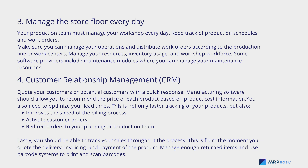Four: customer relationship management (CRM). Quote your customers or potential customers with a quick response. Manufacturing software should allow you to recommend the price of each product based on product cost information. You also need to optimize your lead times — this not only enables faster tracking of your products but also improves the speed of the billing process. Activate customer orders and redirect them to your planning or production team. You should be able to track your sales throughout the process, from the moment you quote to delivery, invoicing, and payment. Manage returned items and use barcode systems to print and scan barcodes.